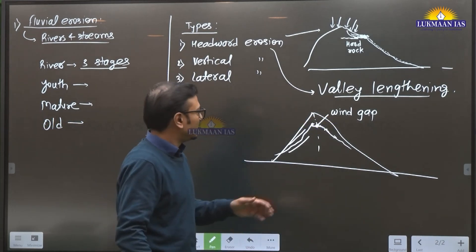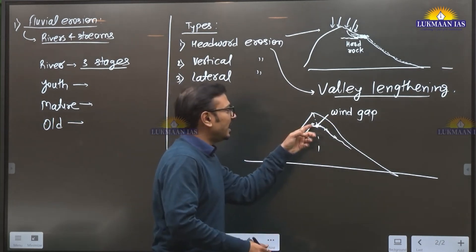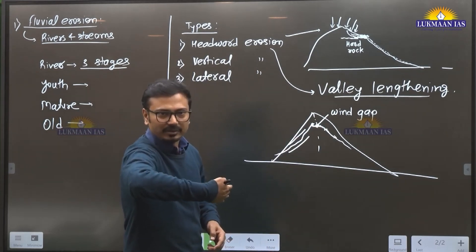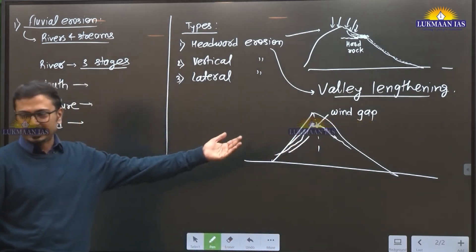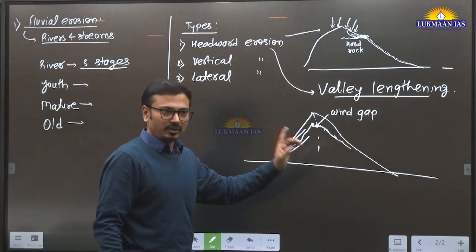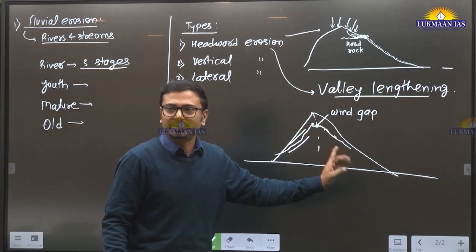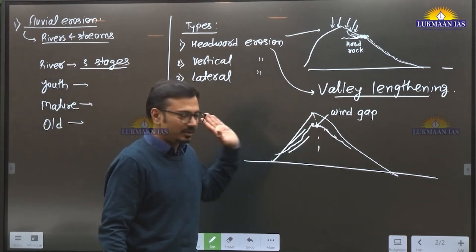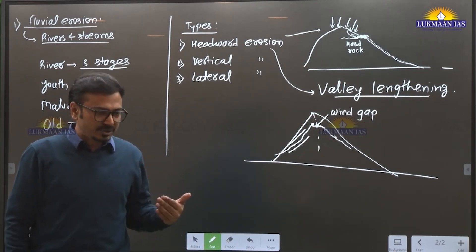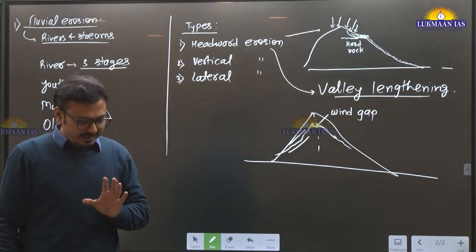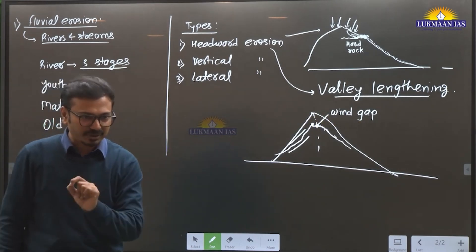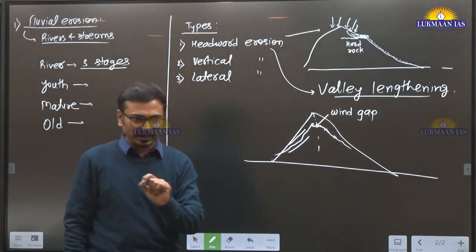Western Ghats, Himalayas — these are transportation links. This is called the elbow of capture. This is one concept where UPSC can ask a question in the prelims examination. The reason is headward erosion. If there is a question in prelims about wind gap, elbow of capture — these terms are associated with river capture, also called river piracy.